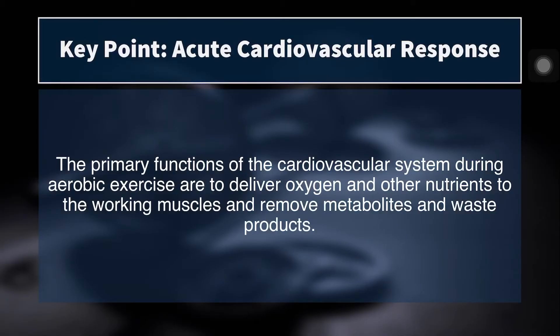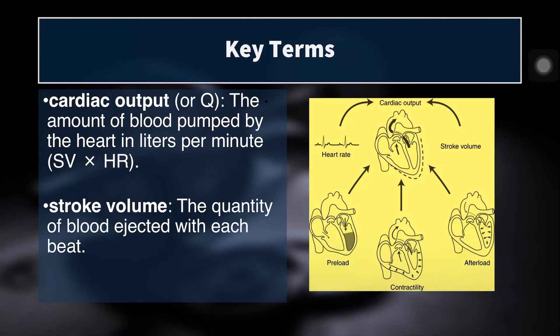One of the primary reasons why we undertake aerobic training is for the cardiovascular adaptations, but there's an acute cardiovascular response we have to talk about, and stressing the cardiovascular system is what ultimately will drive beneficial adaptations. The primary functions of the cardiovascular system during aerobic exercise are to deliver oxygen as well as other nutrients to the working muscles and to remove metabolites and waste products. We want to think about aerobic training as kicking your body into overdrive — all of those processes increase many times above resting levels.